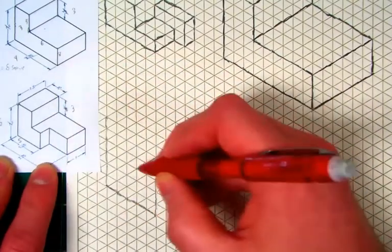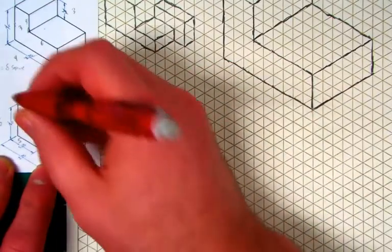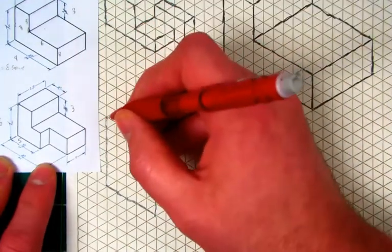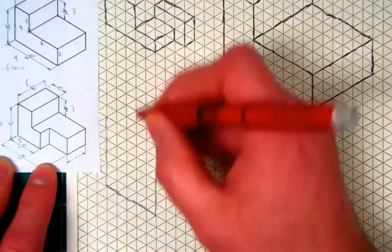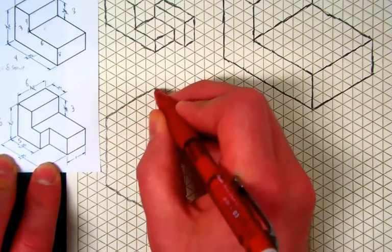And then it doesn't say how far it goes back or how far it goes either direction here. So I'm going to stop there at this end. But I'm going to go backwards. So back and to the right or in the back direction, 6 more. So 1, 2, 3, 4, 5, and 6.